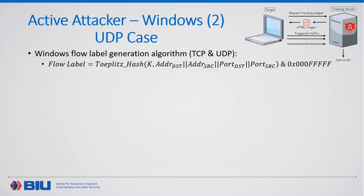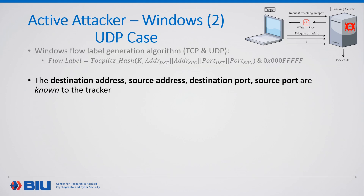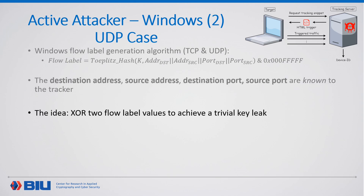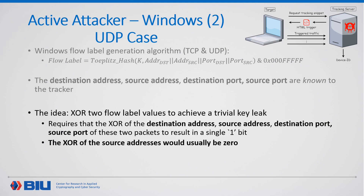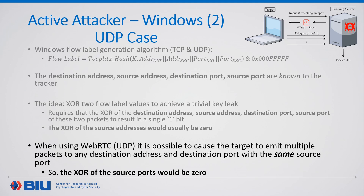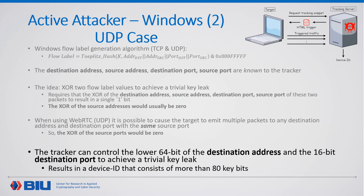Let's form the UDP tracking method. Recall the Windows flow label generation algorithm — the hash input is known to the tracker. The idea is to achieve a trivial leak, so we would like the XOR of hash input fields from two different packets to result in a single 1-bit. Assuming the common case of a single source address, the XOR of the source addresses would be 0. If WebRTC is used to emit UDP traffic, it would cause all packets to originate from the same source port, resulting in a XOR of 0 for the source ports. This leaves us with the destination address and destination port, which are controlled by the tracker, so the tracker can set these values to achieve a trivial leak. By controlling these fields, the attacker can achieve multiple trivial leaks and leak multiple key bits, resulting in more than 80 key bits as a device ID. Note that this attack did not require the attacker to know the values of the source address or source port, which allows the attacker to also track users over VPN.